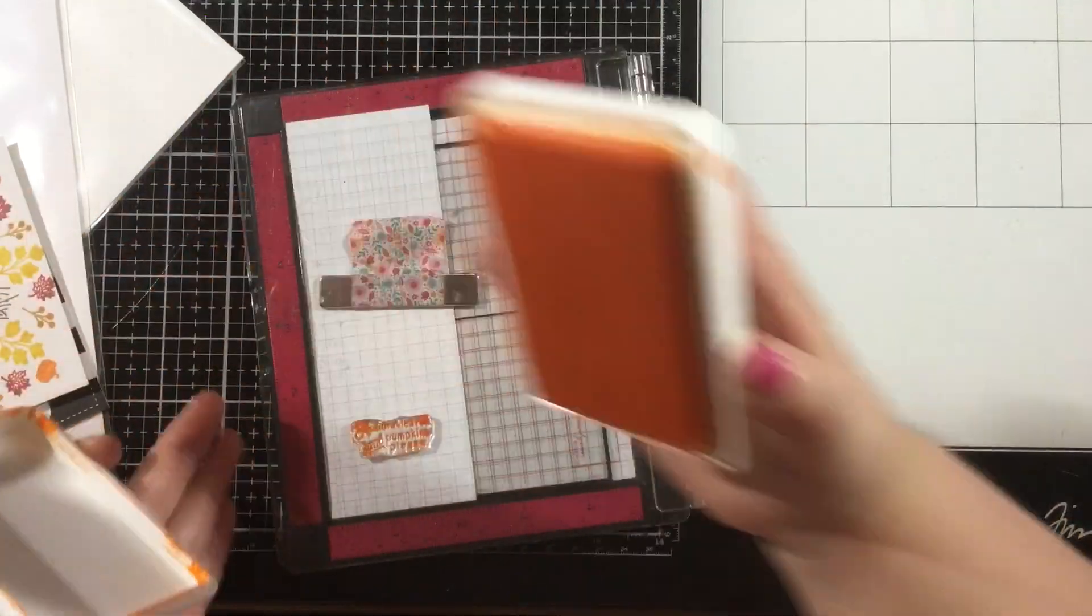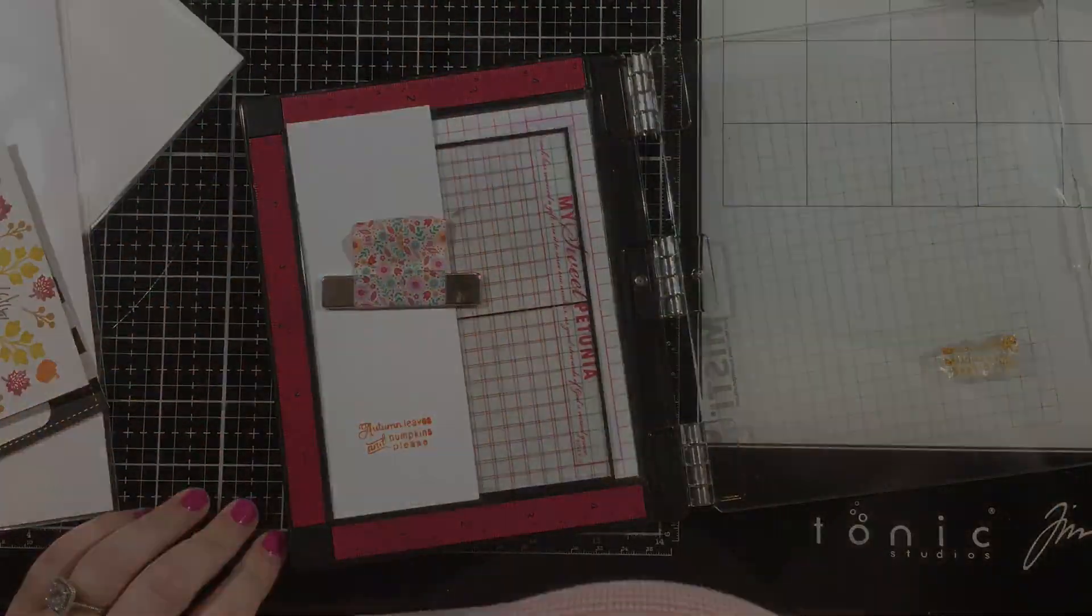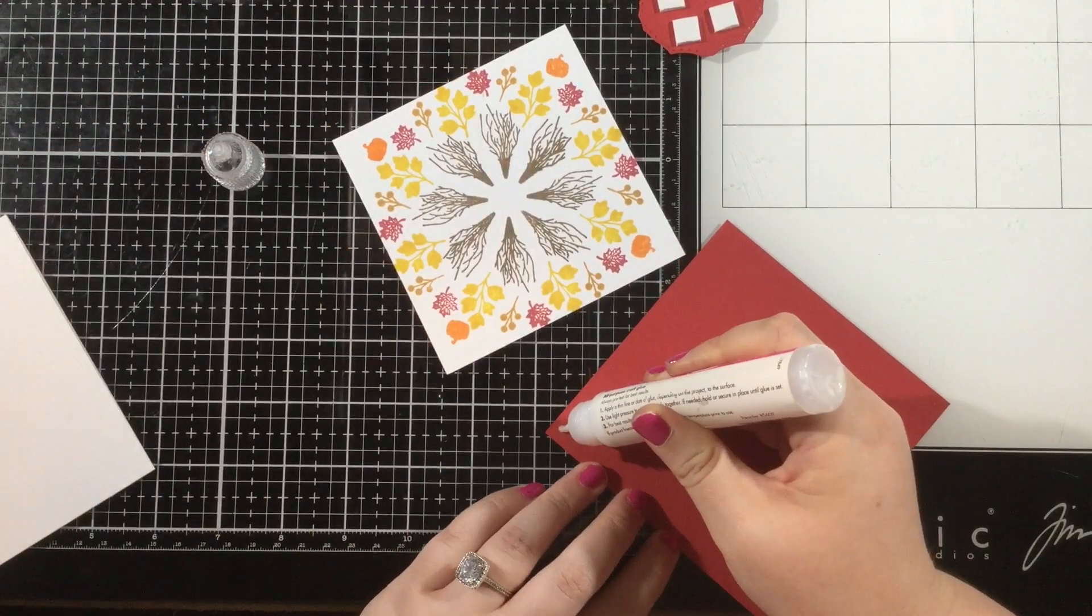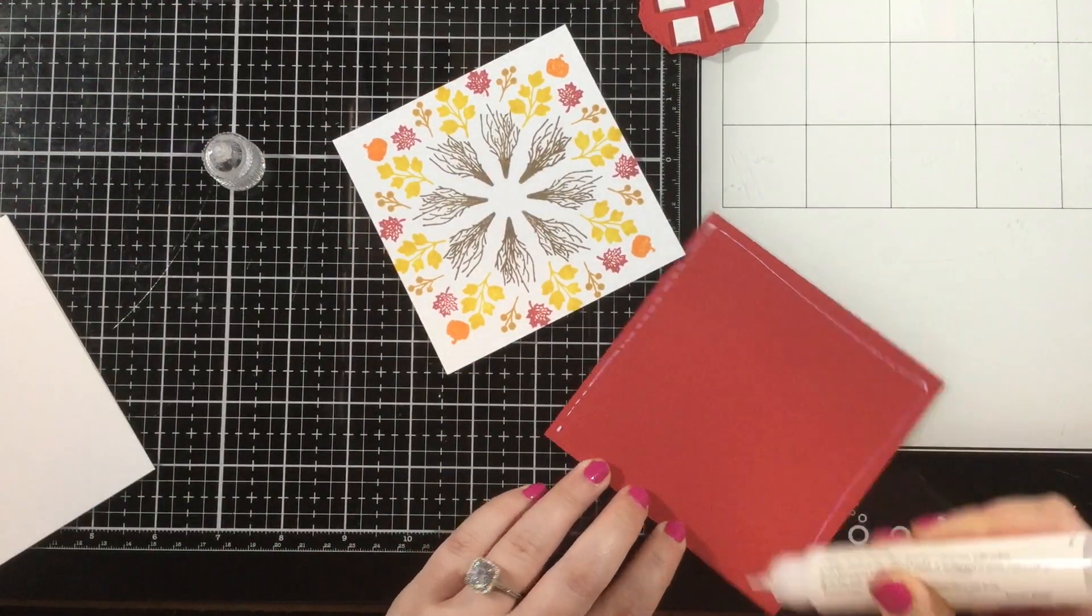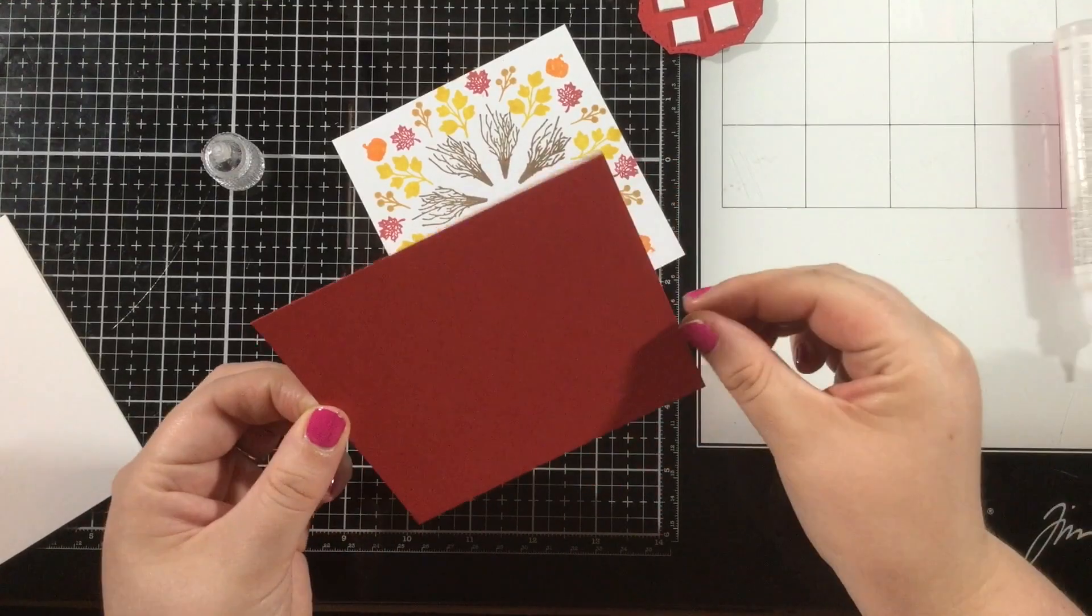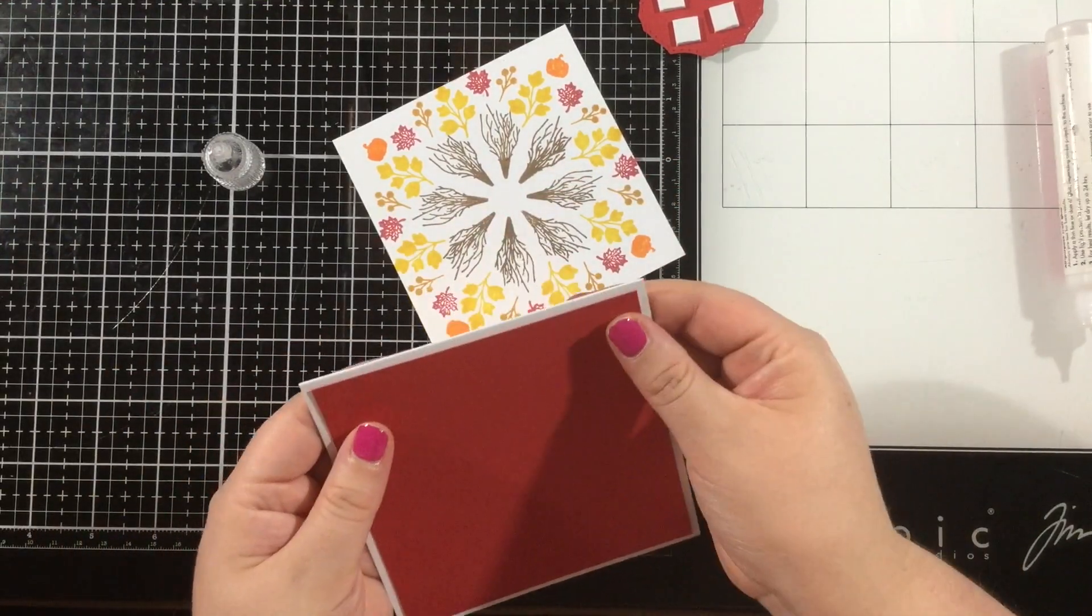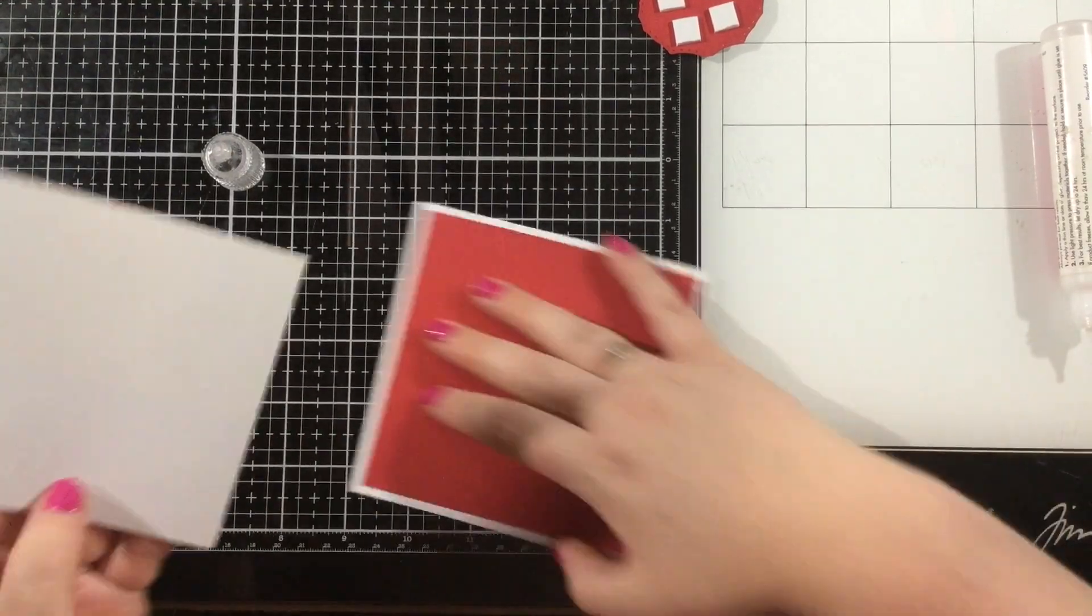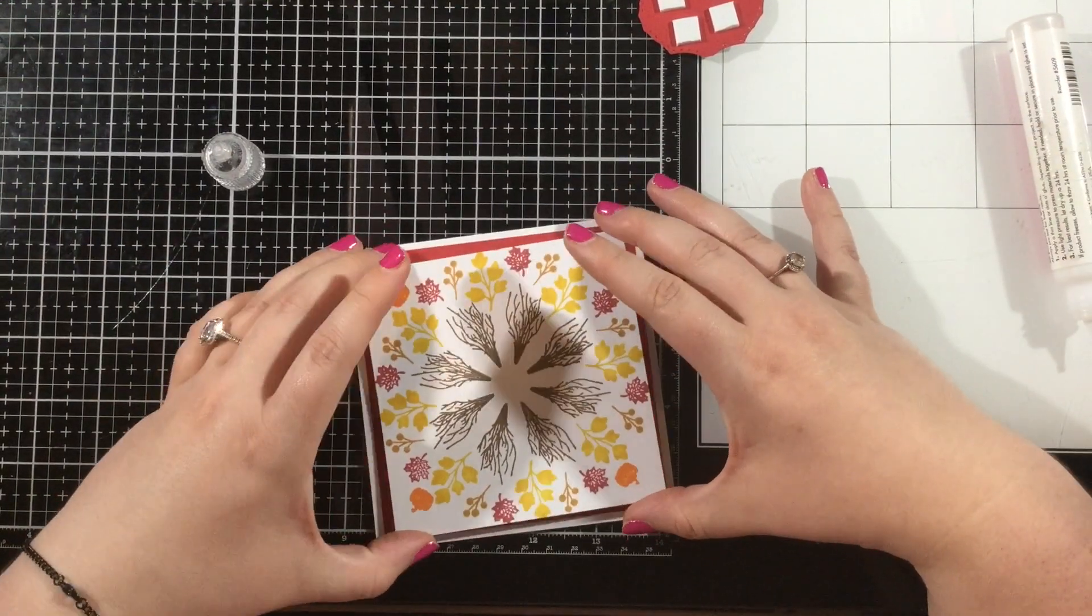I'm going to stamp out my sentiment and I'm using in your face orange, and then I'm going to die cut that using some dies from the new elegant stitched frames slimline die set. I'm just using the little sentiment dies there, the oval dies that's going to fit perfectly around my sentiment.